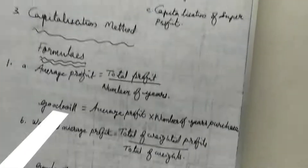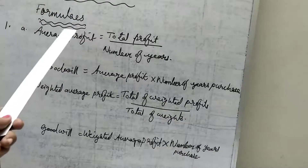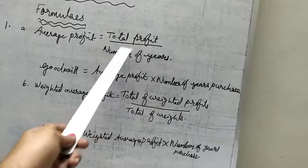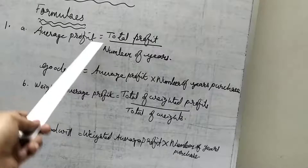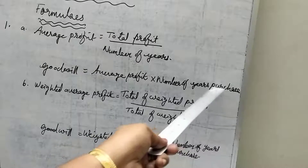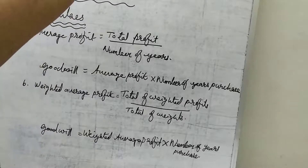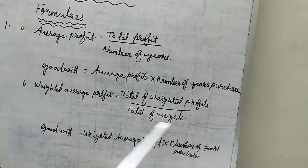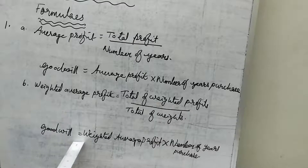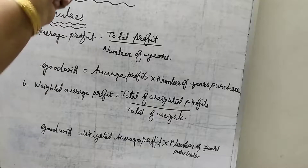Now we want to learn some formulas regarding how to find out the value of goodwill. Under the first method — average profit method — average profit is equal to total profit divided by number of years. After finding out the average profit, goodwill is equal to average profit multiplied by number of years of purchase, where number of years of purchase is given in the question. For the weighted average profit method, weighted average profit is equal to total weighted profits divided by number of weights. Then goodwill is equal to weighted average profit multiplied by number of years of purchase.